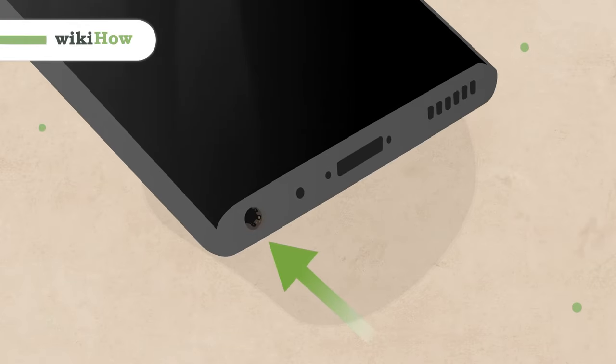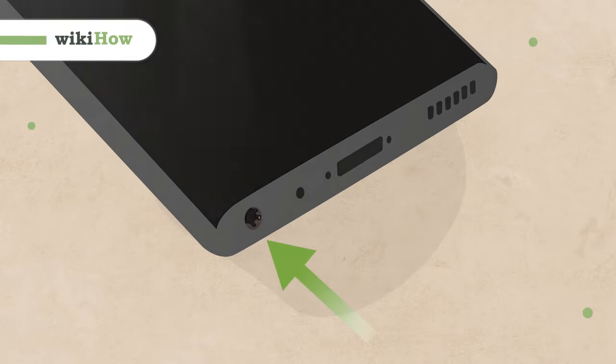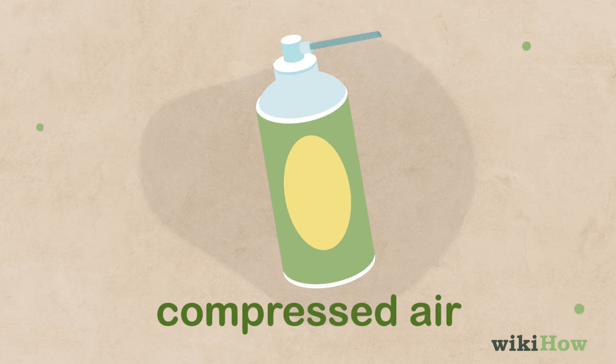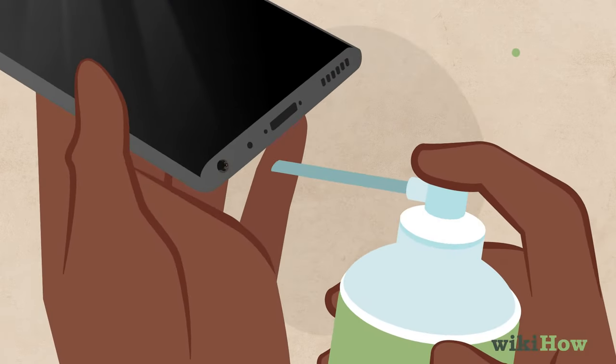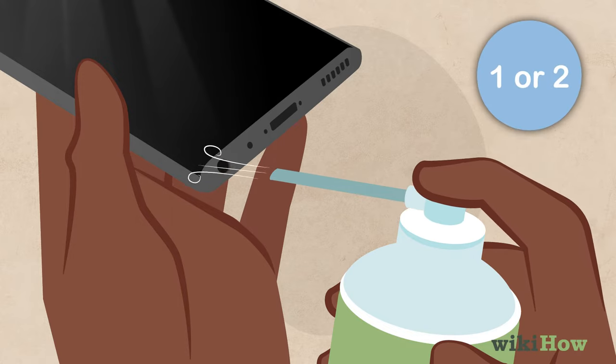If dust and lint have built up in your device's headphone jack, you may be able to clean it out with a puff of compressed air. Aim the nozzle of the compressed air can at the jack and press the button on top of the can to let out one or two blasts of air.